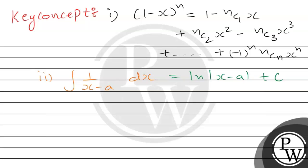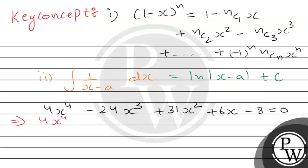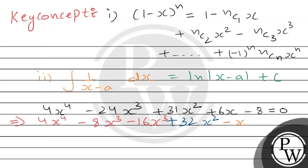हमारे पास given यह था कि 4 times x raised to power 4 minus 24x cube plus 31x square plus 6x minus 8 equals 0. We will split the terms: 24x cube as minus 8x cube minus 16x cube; 31x squared as plus 32x squared minus x squared; and 6x as 2x plus 4x minus 8. This is equal to 0.